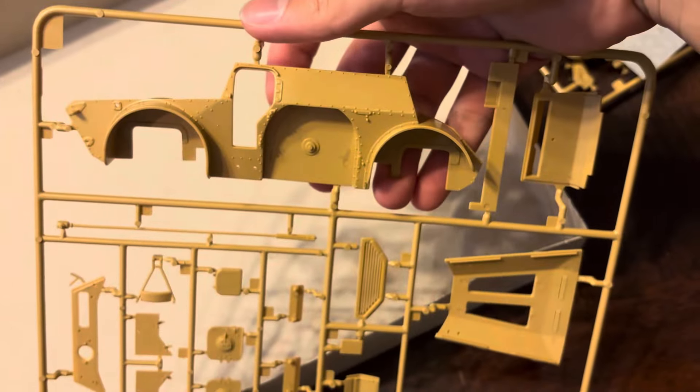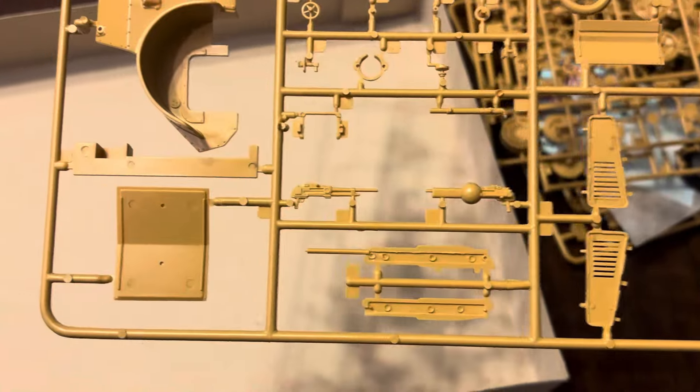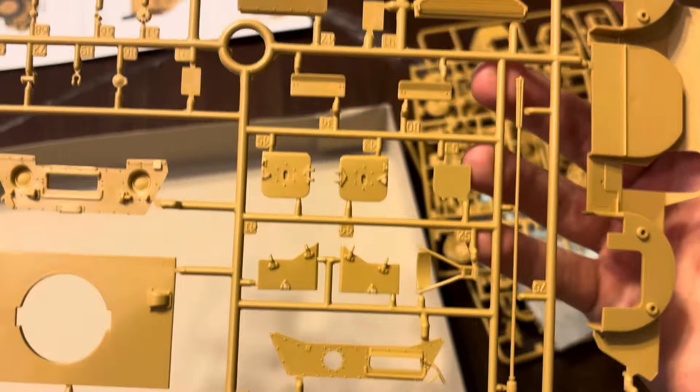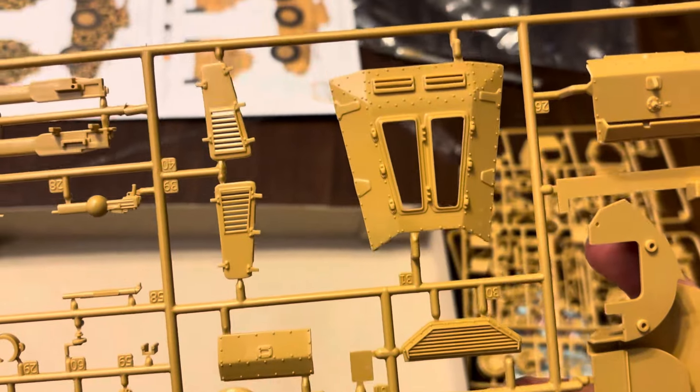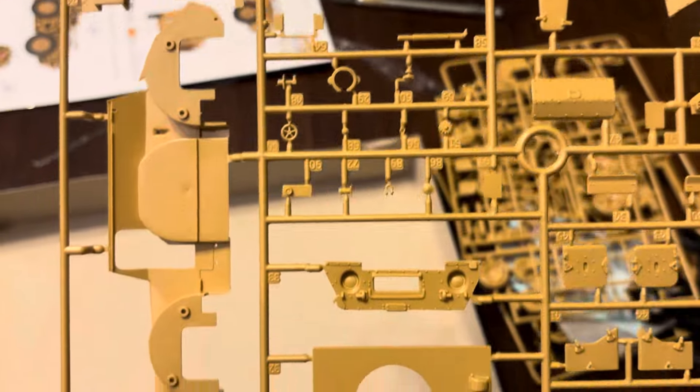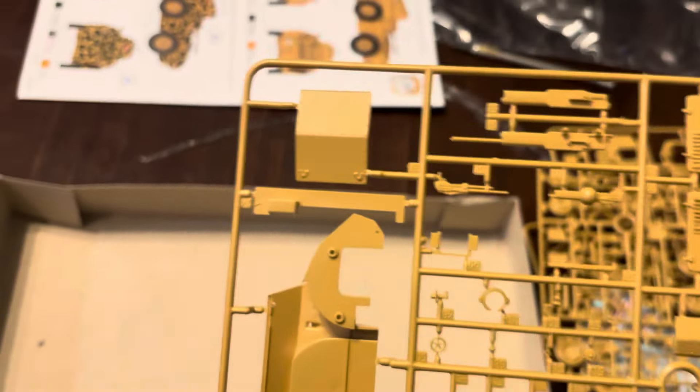Now for the big boy tree, which is tree C, which has the main body of the armored car. Got machine guns, pretty neat. Here's the other side with the hatches, grill, air intake, and main gun.